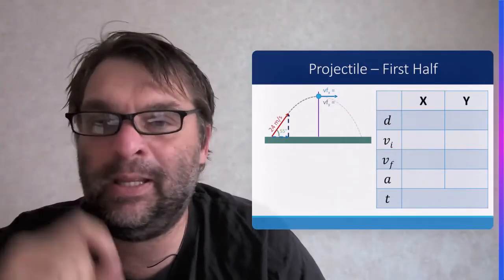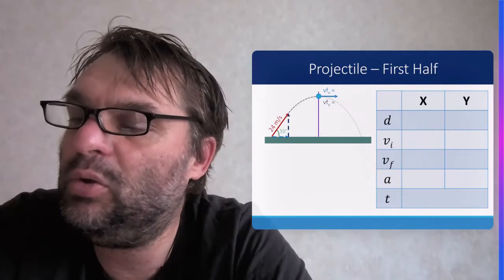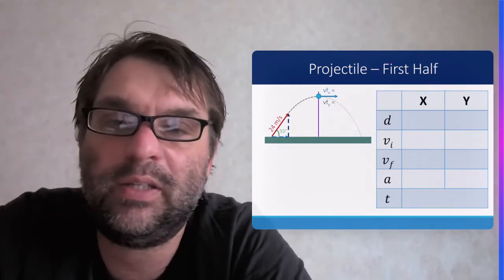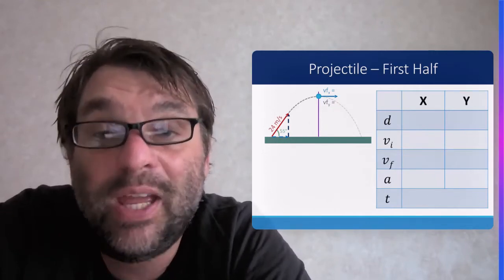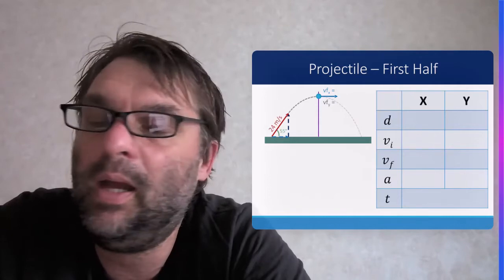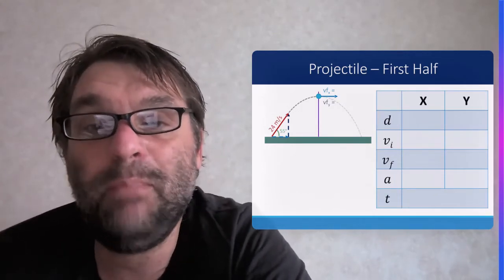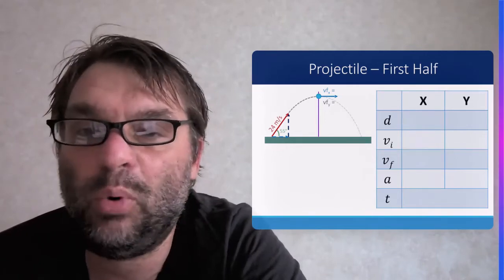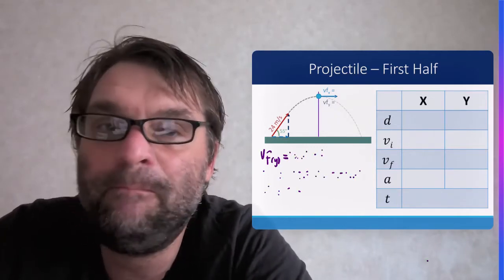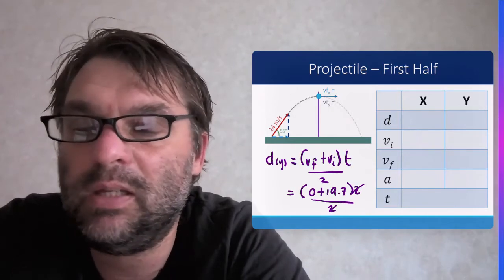In the first half of the projectile's motion, 13.8 m/s is the initial velocity in X, and therefore 13.8 m/s is the final velocity, because they're equal. You get that number through SOHCAHTOA, given the angle and the resultant initial velocity. The initial velocity in Y is similarly determined as 19.7 m/s. Using distance equals velocity times time, you can work out the distance to reach the top: 27.6 meters in the X direction and 19.7 meters in the Y direction.